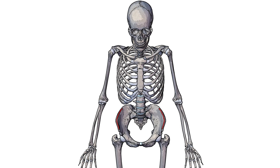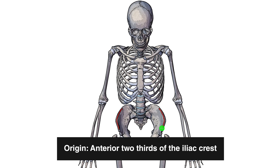Next, we can see a view where we're slightly looking down on the pelvic bone. The second point of origin is highlighted in red on the iliac crest. As the origin works its way around, it stops, covering roughly the anterior two-thirds of the iliac crest.